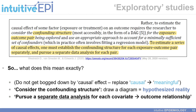What that means essentially is to draw a diagram of the hypothesized reality between your risk factors or exposures of interest and your outcome. They also suggest pursuing a separate data analysis for each covariate-outcome relationship — and a covariate could be labeled as an exposure, a risk factor, a correlate, and so on.